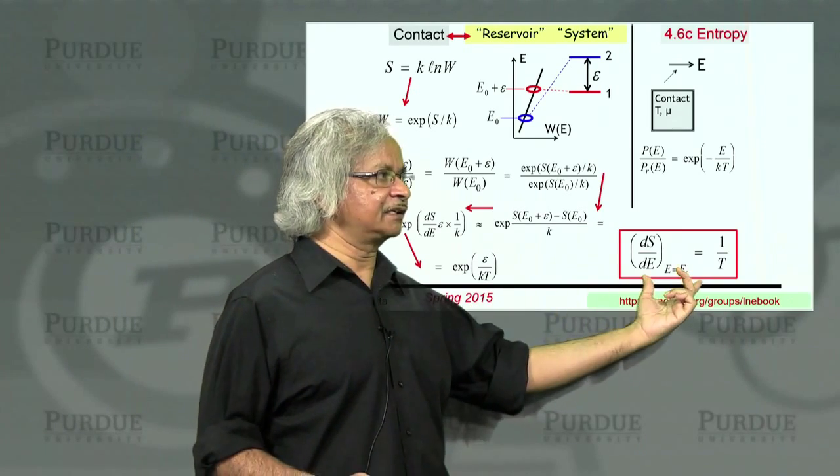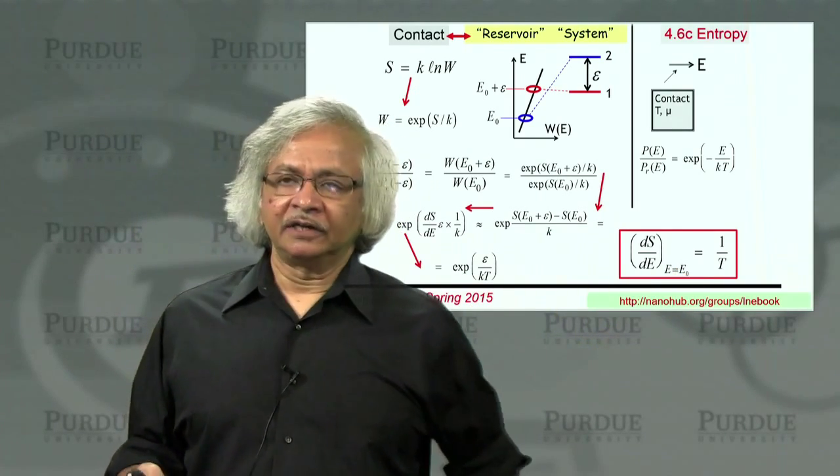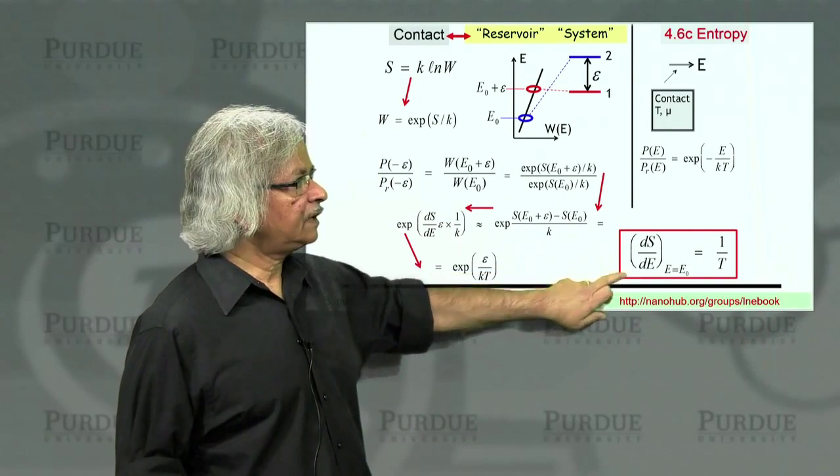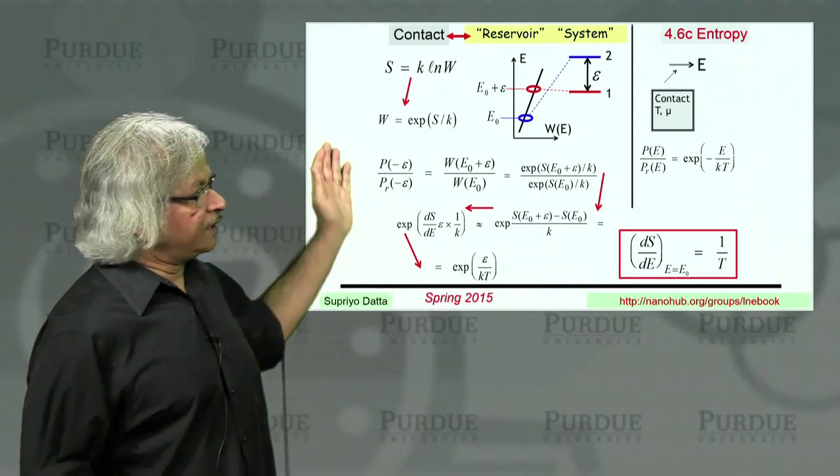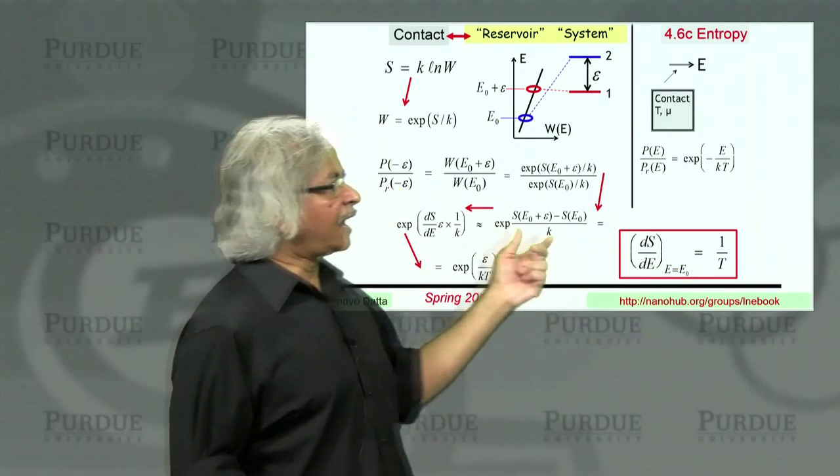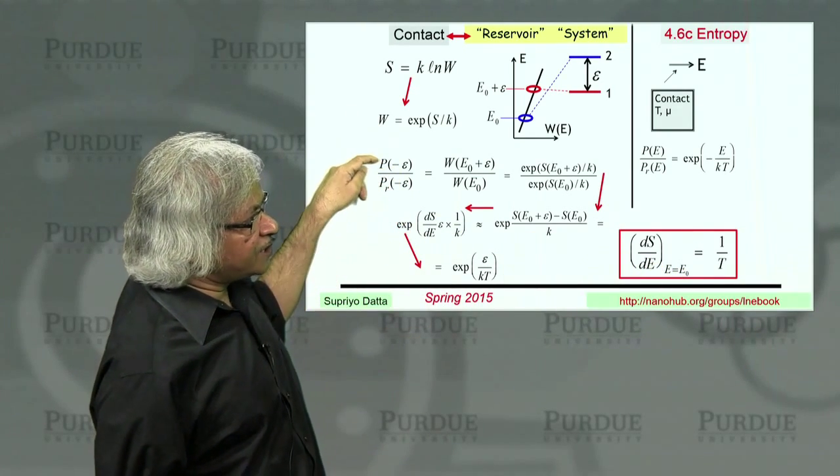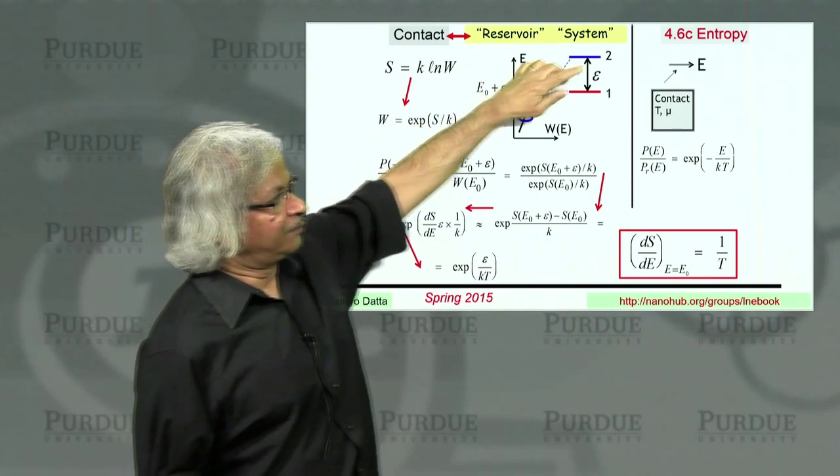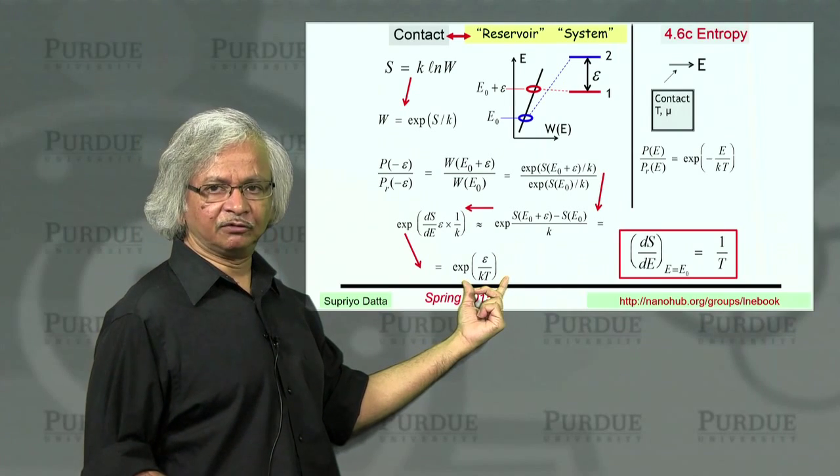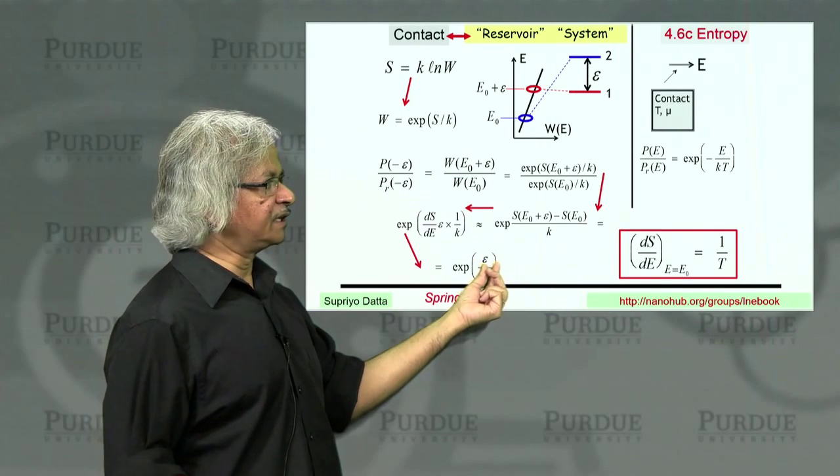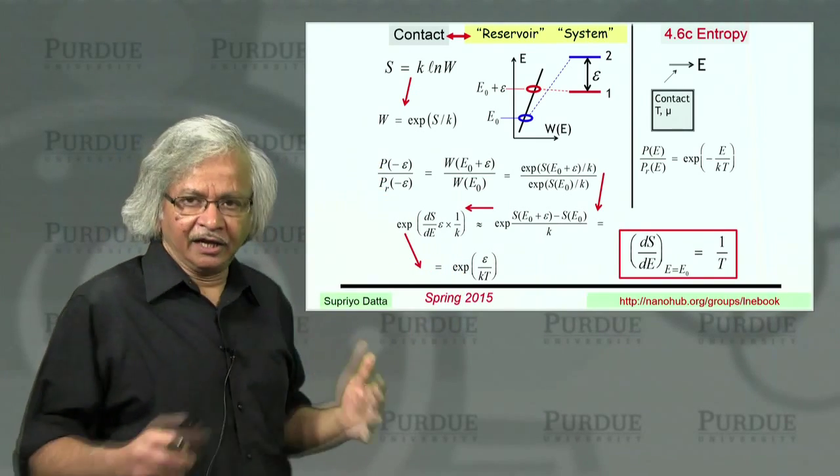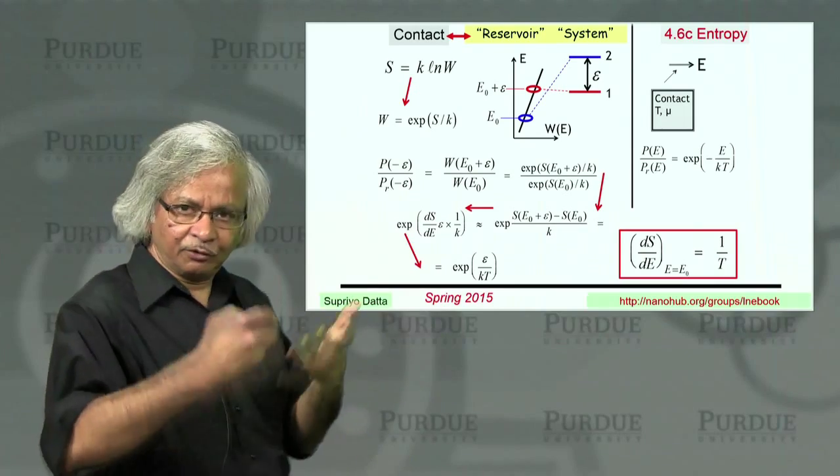And this dS dE, that's actually what is defined as the temperature, as inverse temperature. So that this becomes epsilon over KT. So this is the standard thermodynamic definition of temperature, this quantity here. So in this way then, what you get is this definition of temperature. And what this shows is the ratio of the two Ps, namely the process of coming down and process of going up is given by exponential epsilon over KT. So if epsilon is a positive number, the probability of going down is a lot higher than the reverse process of going up.